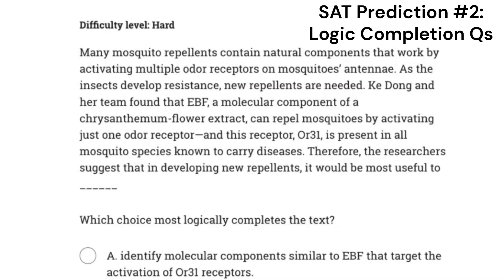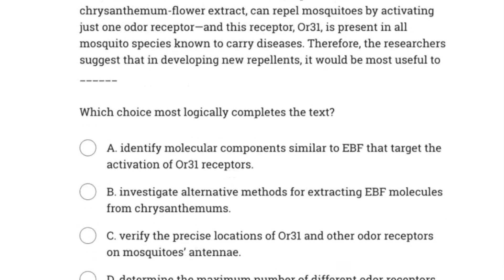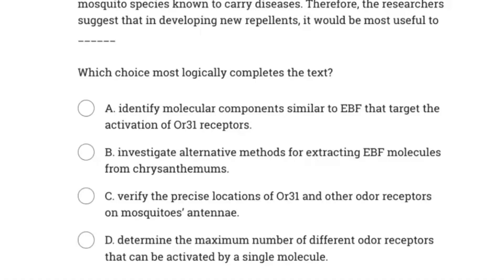The passage says repellents contain natural components that work by activating multiple odor receptors on mosquitoes' antenna. As the insects develop resistance, new repellents are needed. Qidong and her team found that EBF, a molecular component of the flower extract, can repel mosquitoes by activating just one odor receptor, and this receptor — OR31 — is present in all mosquito species known to carry diseases. Therefore, the researchers suggest that in developing new repellents, it would be most useful to do what? The question asks which choice most logically completes the text.